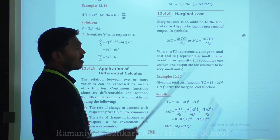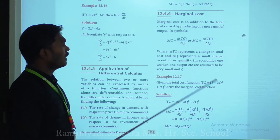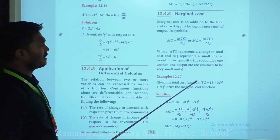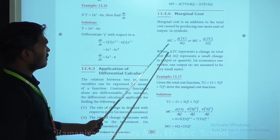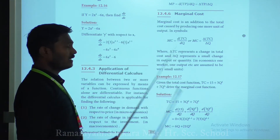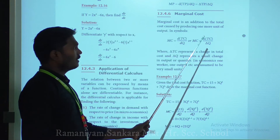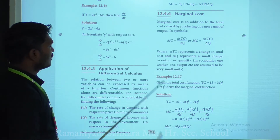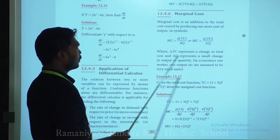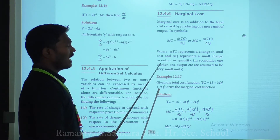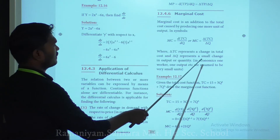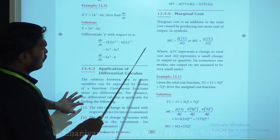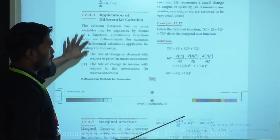Marginal cost is the addition to the total cost caused by producing one more unit of output. In symbols: MC = dTC/dQ, or MC = ΔTC/ΔQ, where ΔTC represents the change in total cost and ΔQ represents the small change in output quantity.